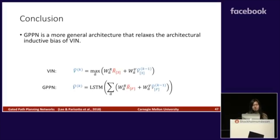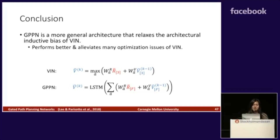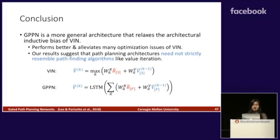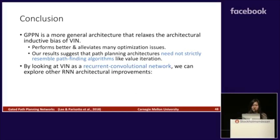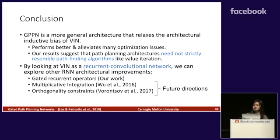To summarize, GPPN is a more general architecture that relaxes the architectural inductive bias of VIN. It performs better and alleviates many optimization issues of VIN. Our results suggest that path planning architectures need not strictly resemble path finding algorithms like value iteration. By looking at VIN as a recurrent convolutional network, we can explore other RNN architectural improvements, including gated recurrent operators, which was the focus of our work, or other RNN improvements introduced recently.